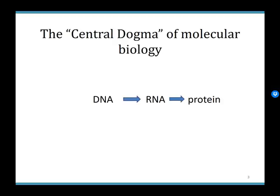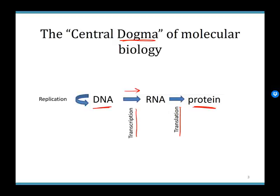A quick review: the central dogma of molecular biology says that everything a cell ultimately becomes derives from DNA. We turn DNA into RNA — that process is called transcription — and then we turn RNA into protein, which is called translation. Today, however, we are looking at replication: how we make more DNA.